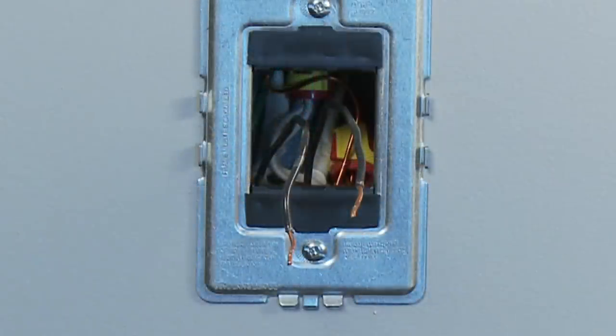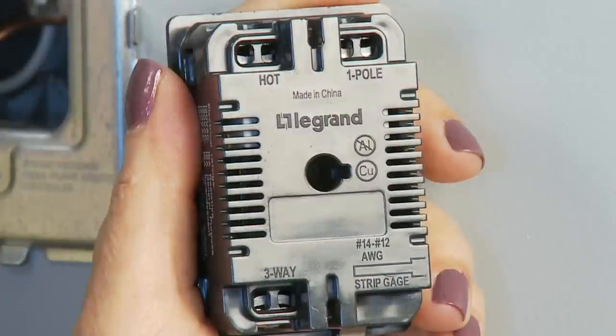If you are wiring a single pole device, attach one wire to the terminal marked one pole, and the other wire to the terminal marked HOT.